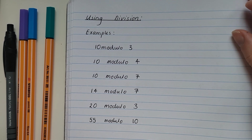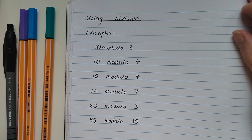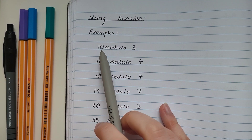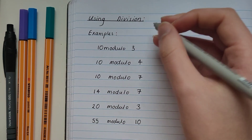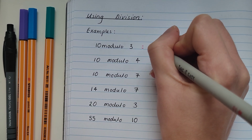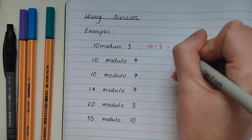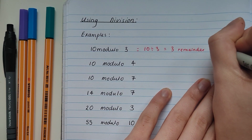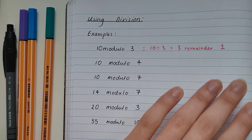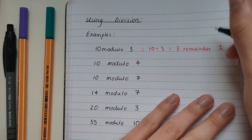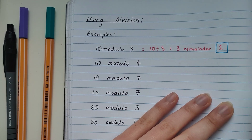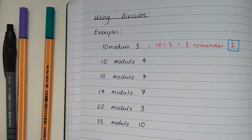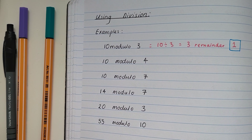Now that you've done the worksheet, let's carry on with some more examples. Some of you might have found a quick trick to do this — the quick trick is to use division. I'm going to show you how that works. For example, if we're doing 10 modulo 3, I'm going to use division: 10 divided by 3 gives us 3 remainder 1.